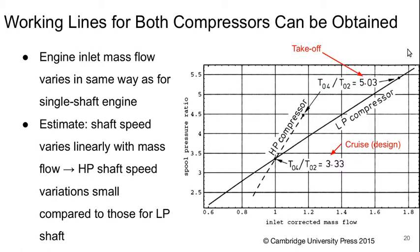But at our take-off condition, especially for a turbojet engine, we should expect that we have to significantly increase T4 over T2 for take-off. The low-pressure compressor increases its non-dimensional mass flow by almost 75%, whereas the high-pressure compressor only increases it by about 15%, at this T4 over T2 equals 5.03 condition. So, the high-pressure shaft is going to see these much smaller variations in its operating points than does the low-pressure shaft, basically because this line is steeper.